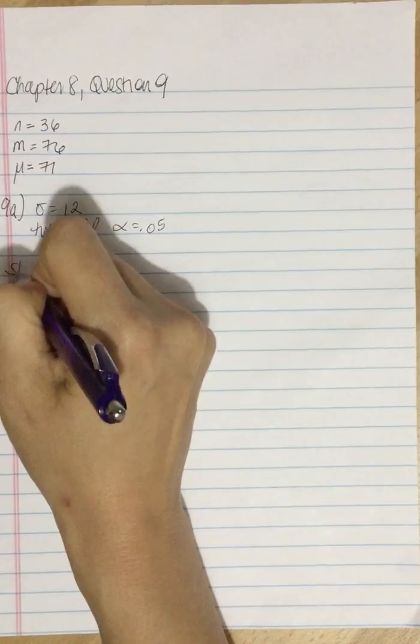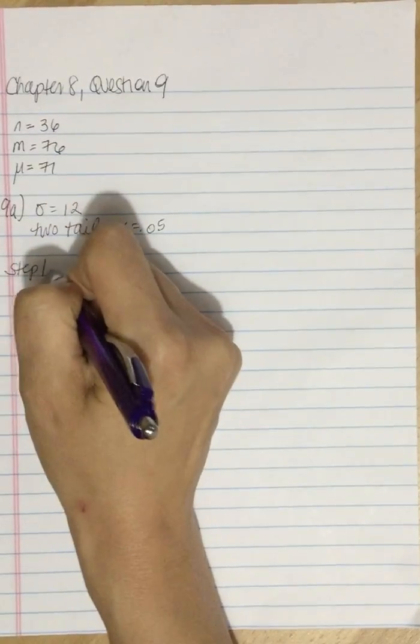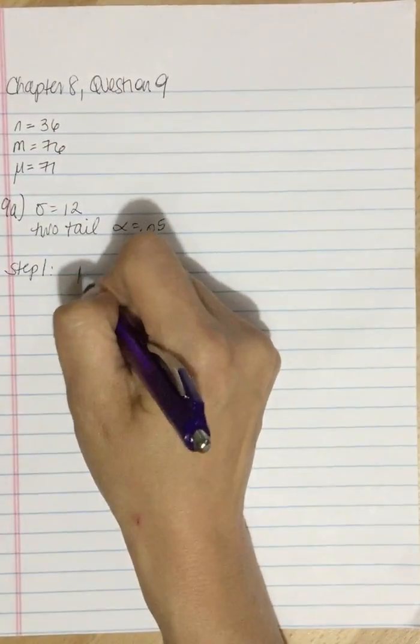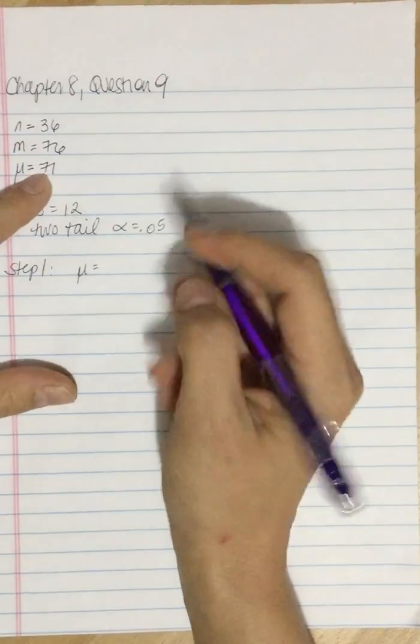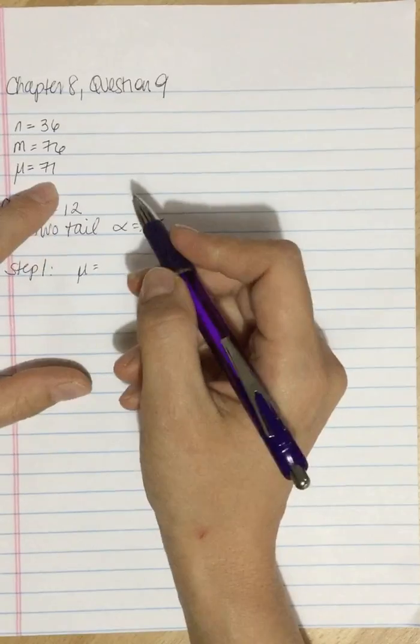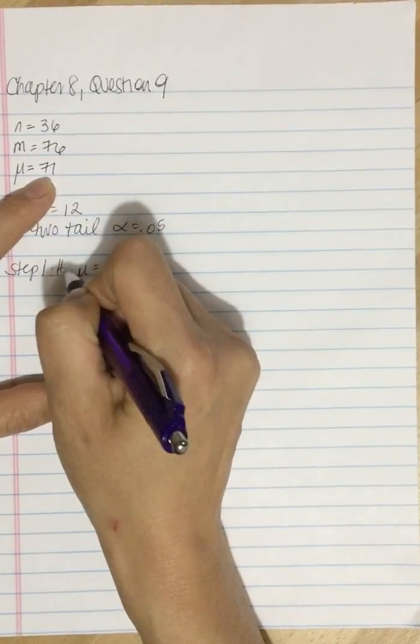So our step one of our hypothesis testing procedure, we need to state our hypotheses. So the first is that our population value of the sample is still 71. This is our null.